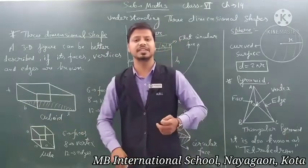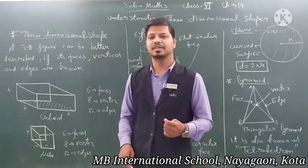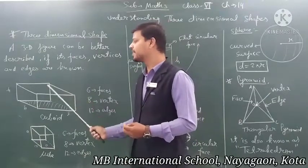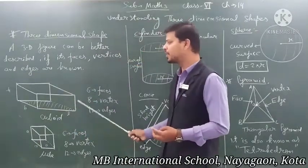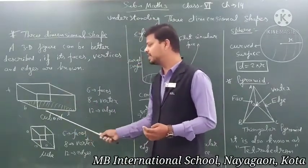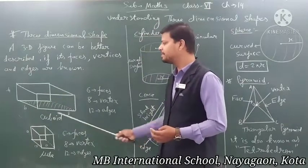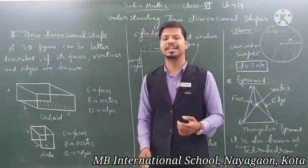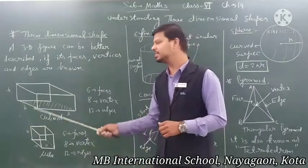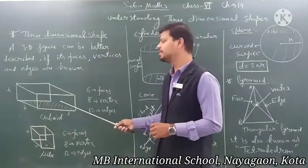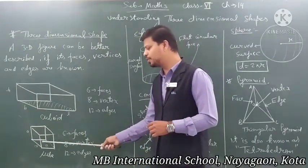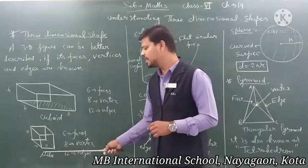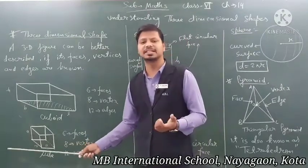For example, a cuboid has length, breadth, and height — three dimensions — so a cuboid is a three-dimensional figure. Similarly, a cube also has length, breadth, and height equal, making it a three-dimensional figure.